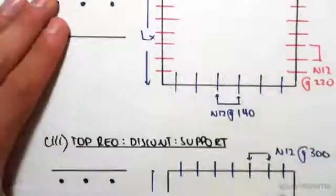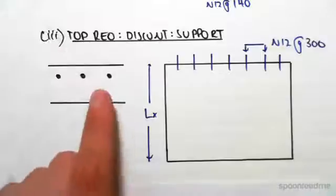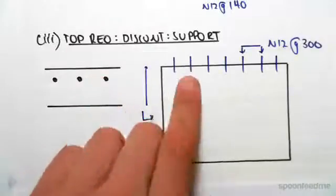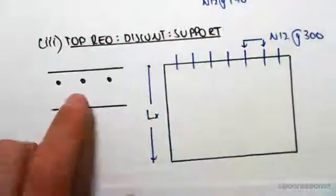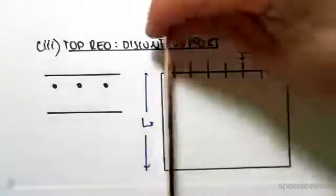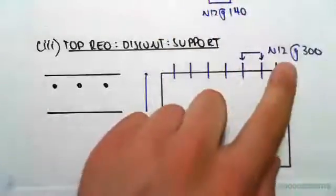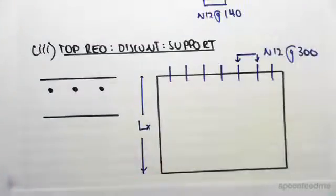So once again, the top reinforcing. The reason it's top at the support at this discontinuous edge is because it's hogging, so the tension is in the top. We found that all we needed to find was the span for the lx at a spacing of 300 mils. So guys, I hope this video just puts everything together.